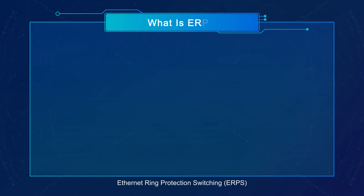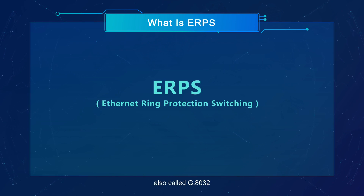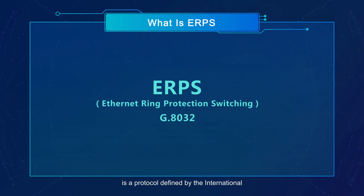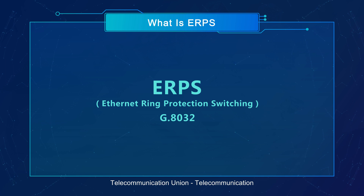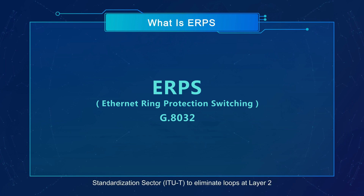Ethernet ring protection switching, ERPS, also called G.8032, is a protocol defined by the International Telecommunication Union Telecommunication Standardization Sector, ITU-T, to eliminate loops at layer 2.